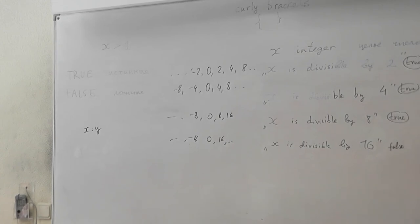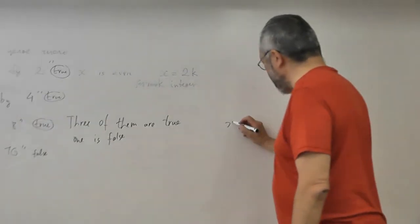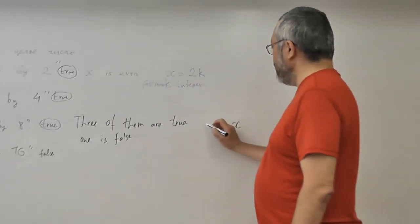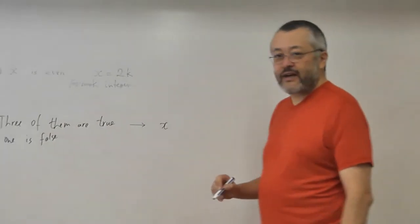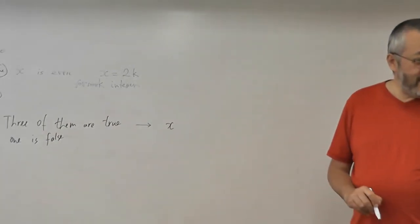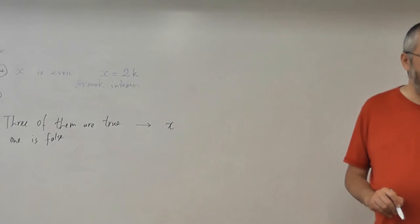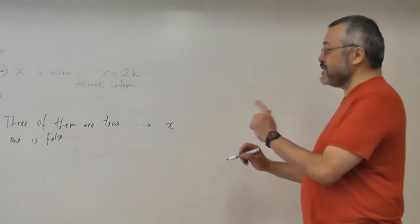So, can we express the general form of these numbers? What can we say about x? If we know that three are true and one is false. x is divisible by eight but not by sixteen. x is divisible by sixteen with remainder eight.